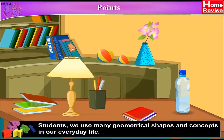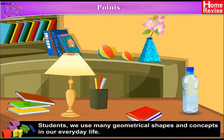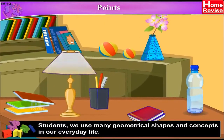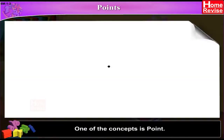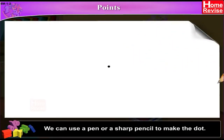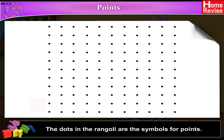Points. Students, we use many geometrical shapes and concepts in our everyday life. One of the concepts is points. A point is shown by a tiny dot. We can use a pen or a sharp pencil to make the dot. The dots in the Rangoli are the symbols for points.